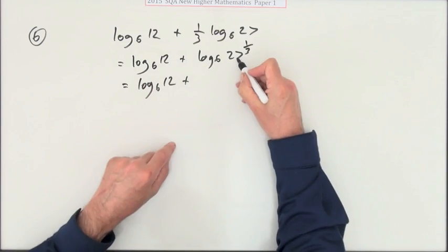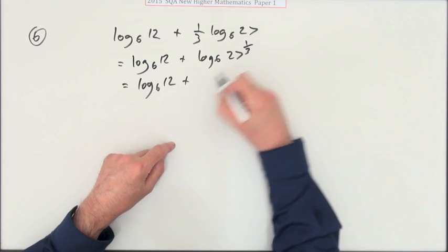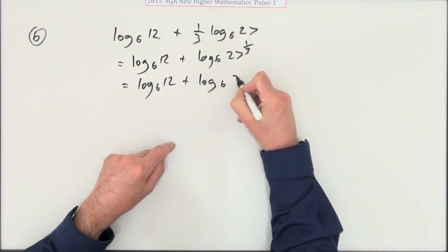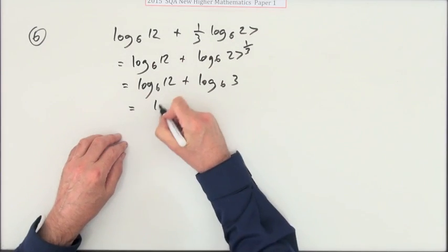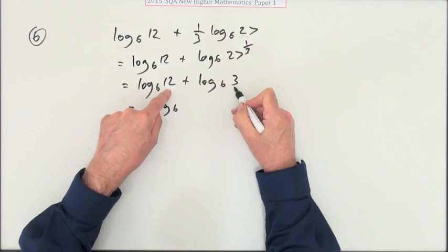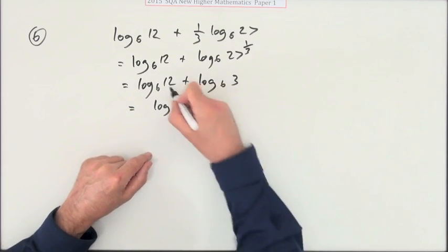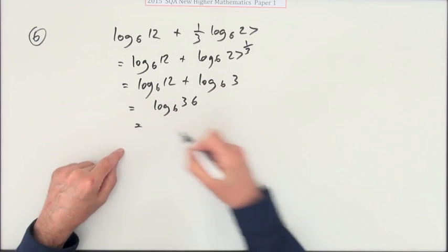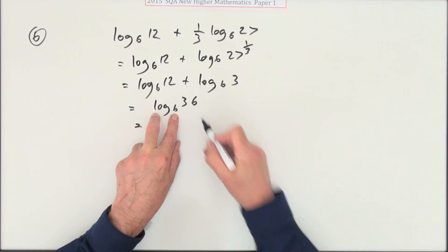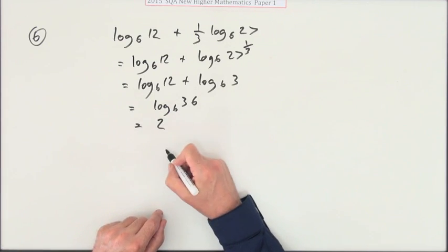Now 27 to the power of 1/3 is the cube root, which is 3. I knew that anyway. Adding logs, so you multiply the operands: 3 times 12 is 36. Then a simple matter of definition: what power of 6 makes 36? That'll be 2.